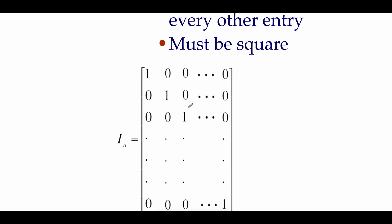The last thing we're looking at is called an identity matrix. An identity matrix is made up of all ones along the main diagonal and zeros in every other entry, and it must be a square matrix — two by two, three by three, four by four, and so on. Here's an example of a three by three identity matrix: the main diagonal is all ones and every other entry is zero. That's it for this video — please remember to fill out the Google form linked in the description below, and thanks for watching.